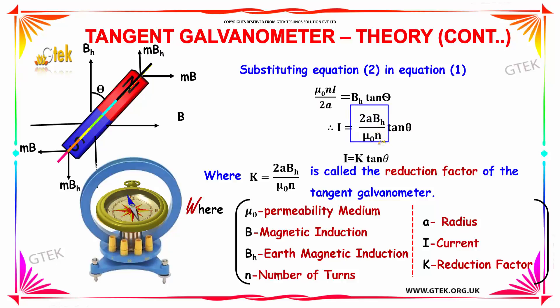Substituting K equals 2ABH divided by μ₀N, we get I equals K tan theta, where K is the constant called the reduction factor of the tangent galvanometer.